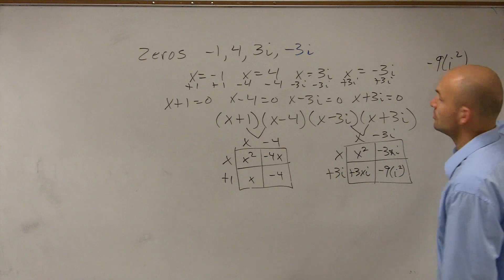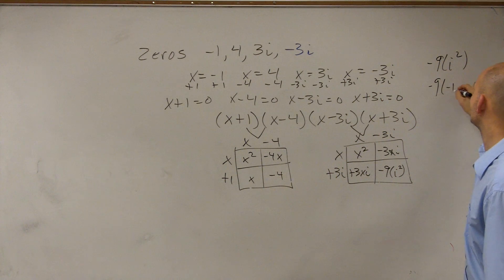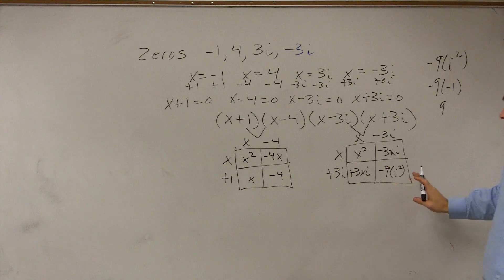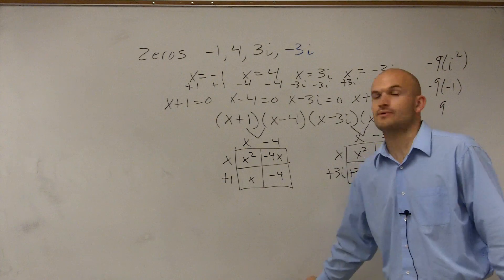So let's do this. Negative 1 times i squared. Remember i squared equals negative 1. So that's going to equal positive 9. So this answer is actually positive 9. So I'm going to erase that, okay?